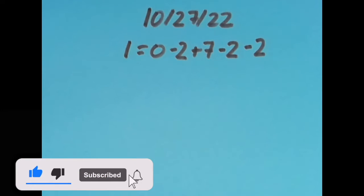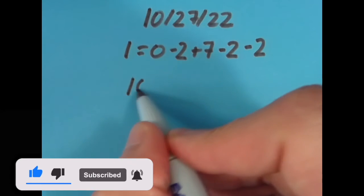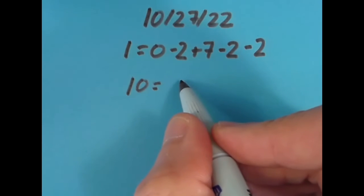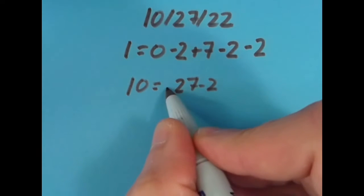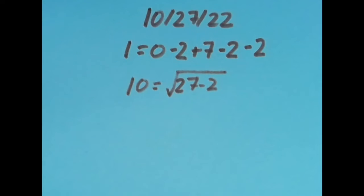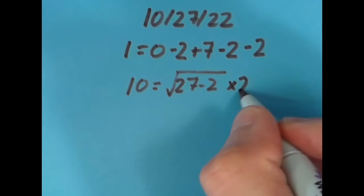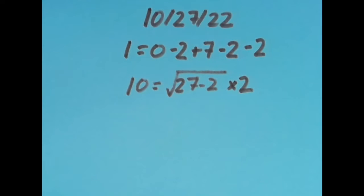I tried it some other ways. I moved the equal sign around a bit. If I move it one spot to the right, I get that 10 equals—then I said, okay, 27 - 2 is 25, and the square root of that 25 is 5, and 5 × 2 is 10, so that also works.